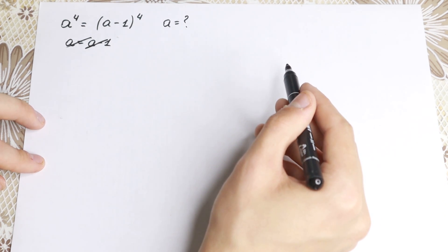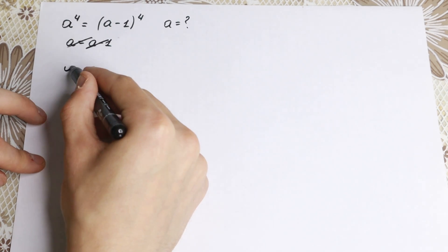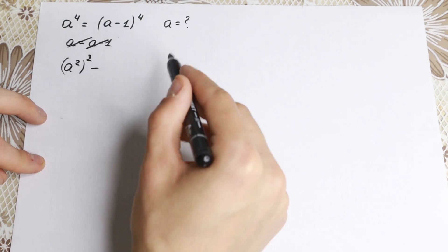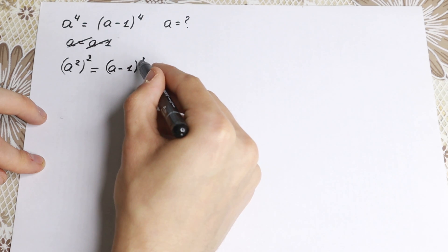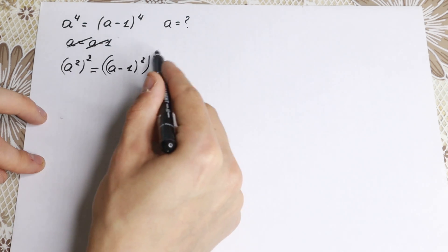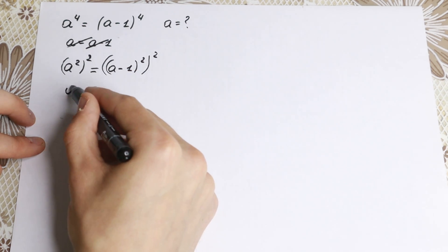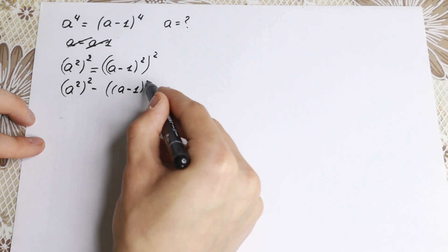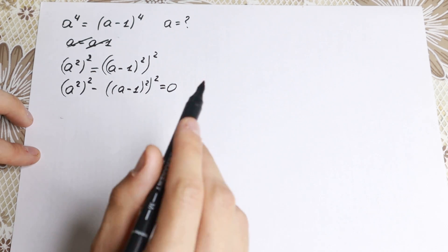Let's forget that approach and solve it properly. We can write a to the fourth as a-squared raised to the second power, and similarly (a−1)⁴ as (a−1)² raised to the second power. If we bring the right-hand side to the left, we have (a²)² minus ((a−1)²)² equal to zero.